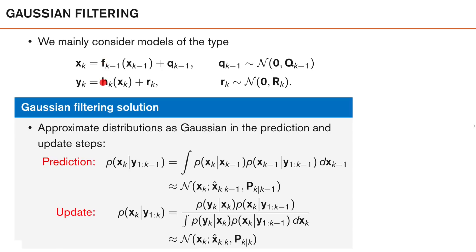As mentioned in the previous video, the idea in Gaussian filtering is to perform filtering using the conventional prediction and update step, but where we approximate the predicted and updated density as Gaussian densities. This means that filtering boils down to finding these four moments — the mean and covariance of the predicted density and the mean and covariance of the updated density. The problem we are facing is how we can choose these moments such that our Gaussian density approximates these non-Gaussian densities as well as possible.